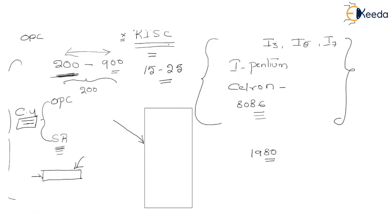But RISC also has some drawbacks. When you use a RISC processor in your system, you need to ensure that your computer system doesn't go for much usage — your computer system can only support a few applications. In the next session, we're going to understand the characteristics of RISC and CISC.